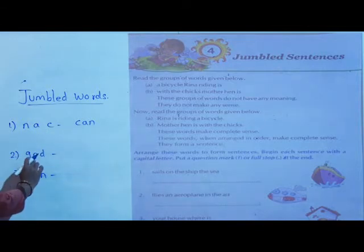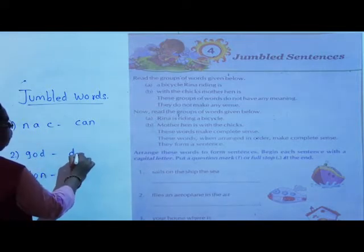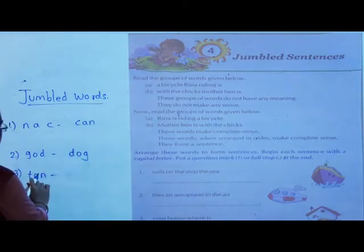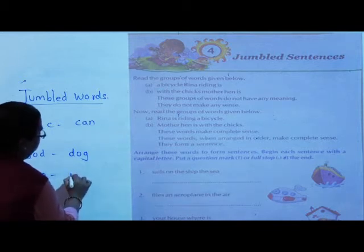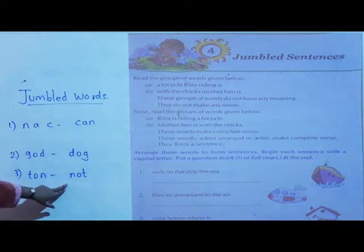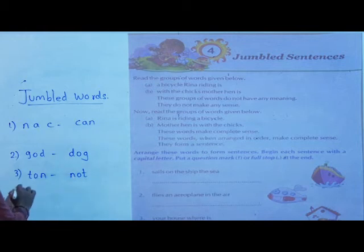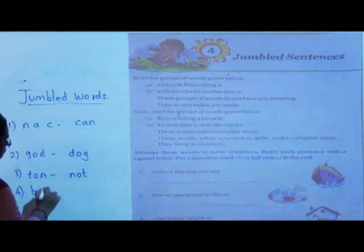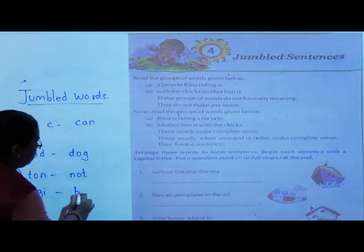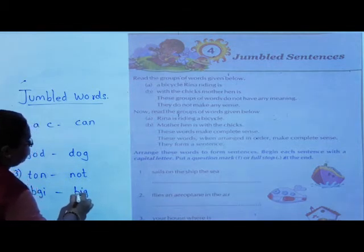Then next: d, o, g — this becomes 'dog'. Then t, o, n — rearranged as n, o, t — 'not'. These words all make some sense and we will use them in a sentence. Then b, g, i — does it have any meaning? No. So rearranged: b, i, g — 'big'.